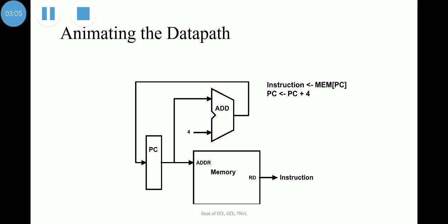Let us see the animation of this data path, which includes the memory unit, the program counter unit, and the add unit — the ALU specifically meant to perform addition. The program counter gives the instruction address to the memory, and once we read from the memory we read the instructions via the RD signal line. The program counter also gives its address to the adder, where a four-byte immediate constant is added. The result is then fetched back into the program counter so it holds the address of the next instruction.